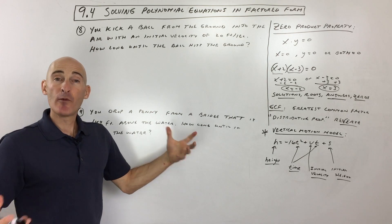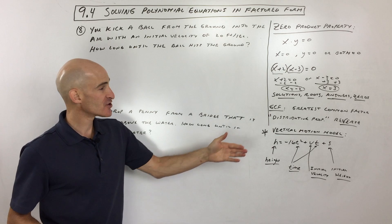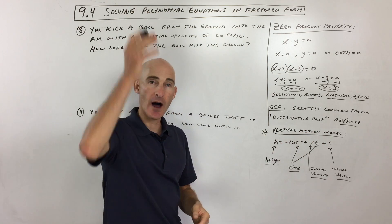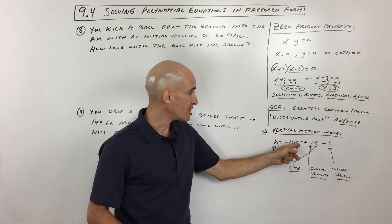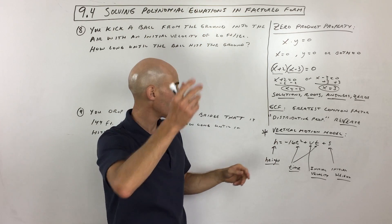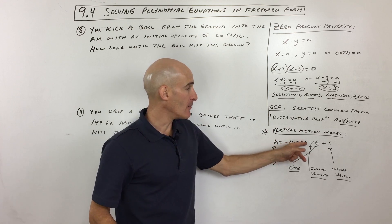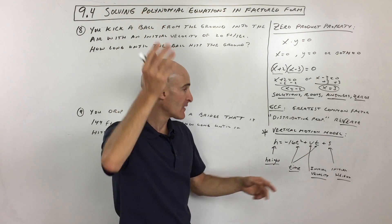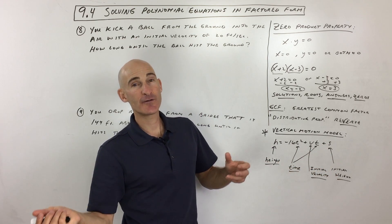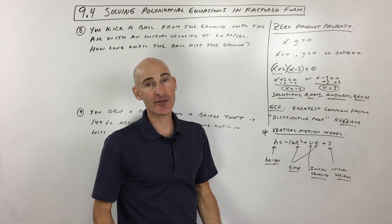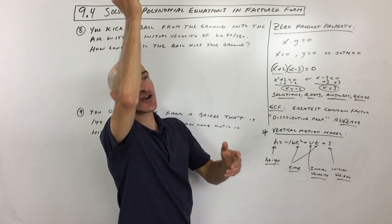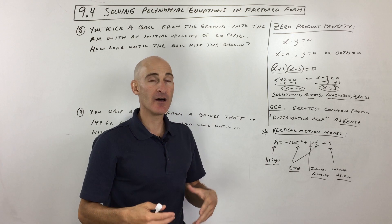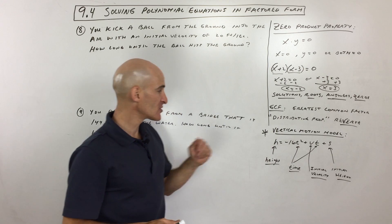Let's do some word problems. First, let's talk about the vertical motion model formula to add to your formula sheet. Vertical means up and down, and this is a model representing height as a function of time. If you throw something up into the air, the formula gives you the height depending on how many seconds have passed. Here v is the initial velocity — the speed at which you throw it — and s is the initial height. For example, if you're on a 100-foot building, s equals 100. This formula is set up in terms of feet.